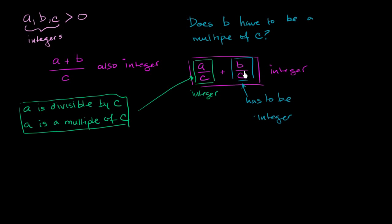And if b over c is an integer, that means that yes, b must be a multiple of c. So the answer is yes.